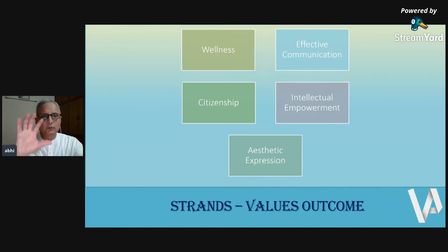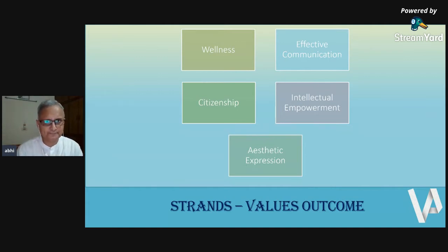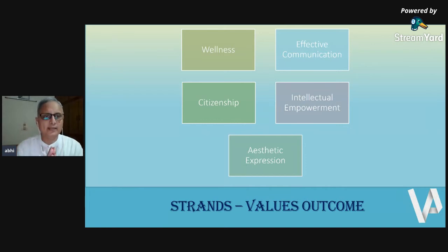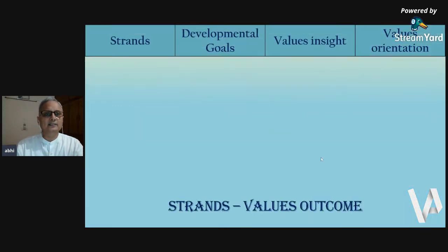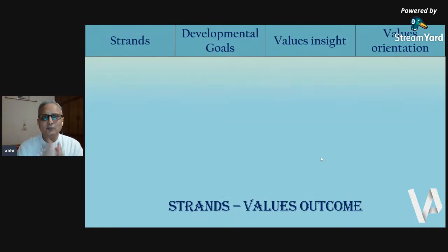Today we're going to look at these five specifically to understand each one of them. As I already said, they are: wellness, effective communication, citizenship, intellectual empowerment, and aesthetic expression. These five are in no way in chronological order — they are all equally important. So we look at them one by one. And if you have a piece of paper and pen, you can join the journey to make your own notes and start writing from that perspective.